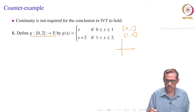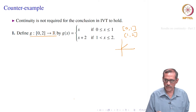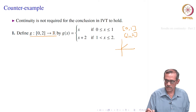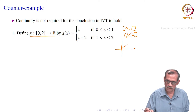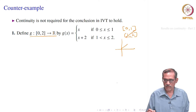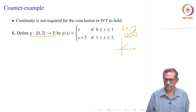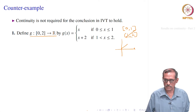How does the graph look? It is x for 0 to 1 — something like this — and it is x+2 for x greater than 1. So at x=1, it becomes 3. It goes up to 4 at x=2. So it would look something like this. Then it is not continuous — there is a break.